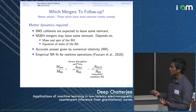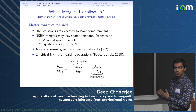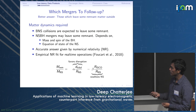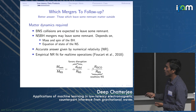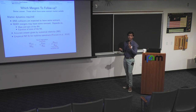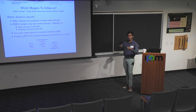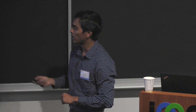A better answer is that mergers that leave some remnant matter outside are the better ones to follow up. BNS collisions are expected to leave remnant matter, but neutron star–black hole systems may leave some remnant matter depending on the mass and spin of the black hole, and also the equation of state of the star, which dictates how big the star can become — a larger star is easier to disrupt. Accurate answers are given by numerical relativity simulations, but they are very expensive and cannot be done at low latency. Only on the order of a hundred simulations have been done to date. Empirical fits to NR simulations are a good use case. The key competing effects are the tidal or Roche radius versus the ISCO.